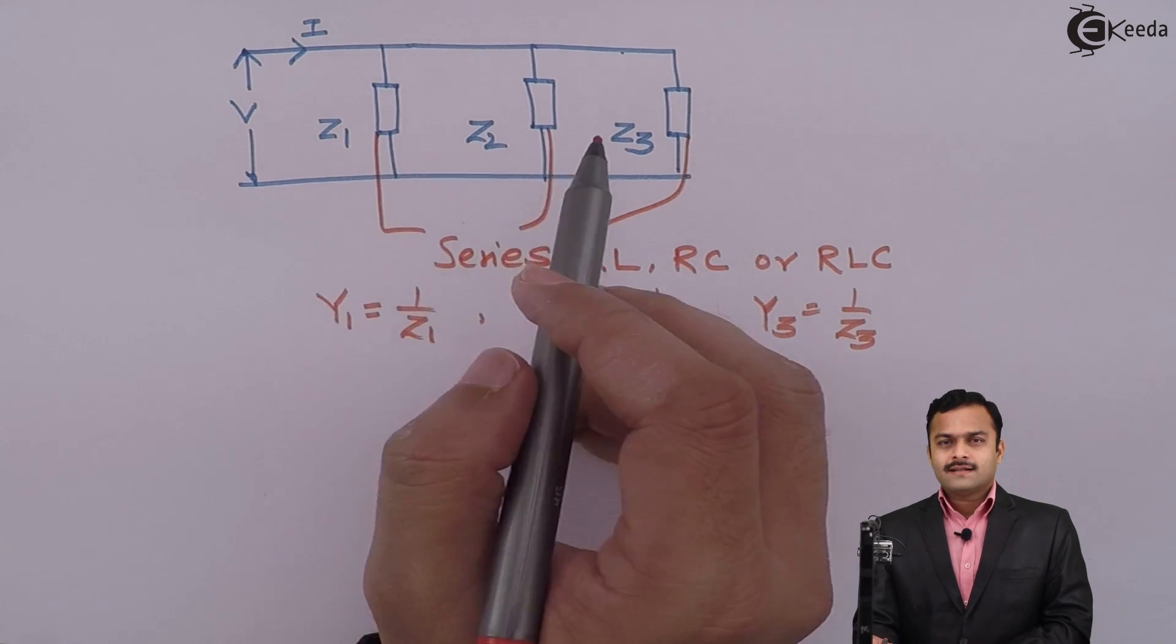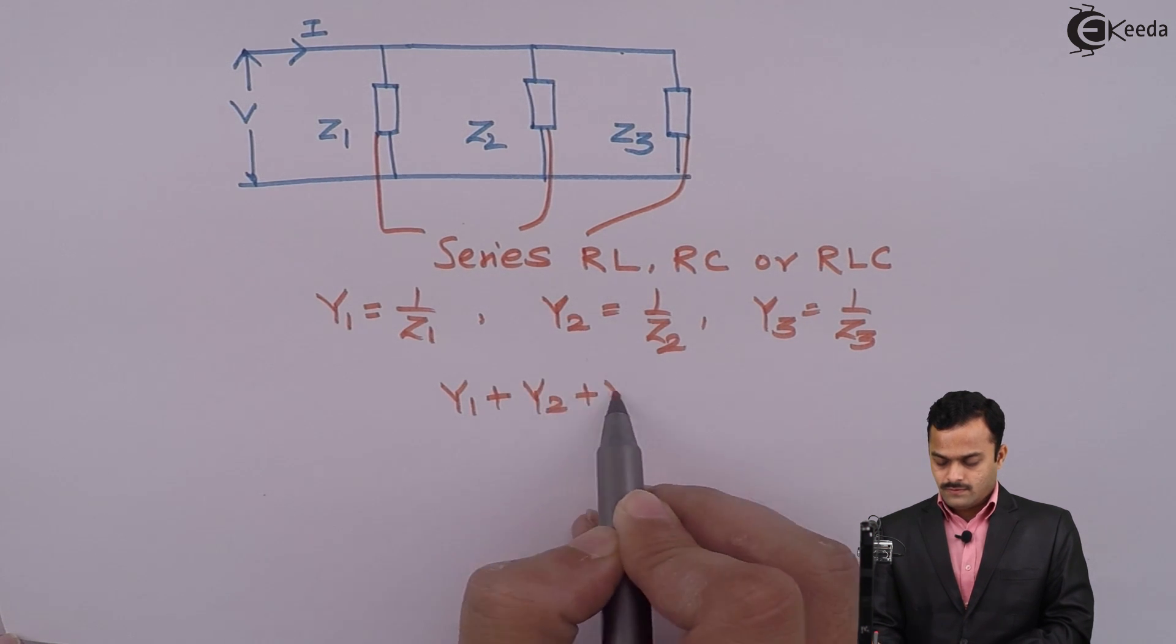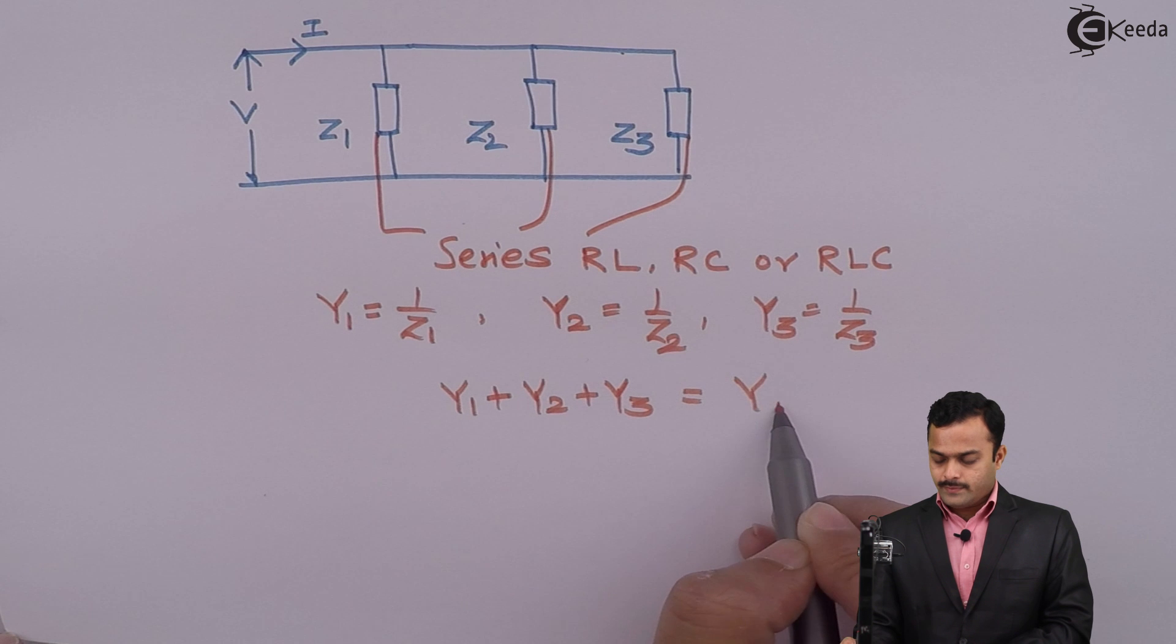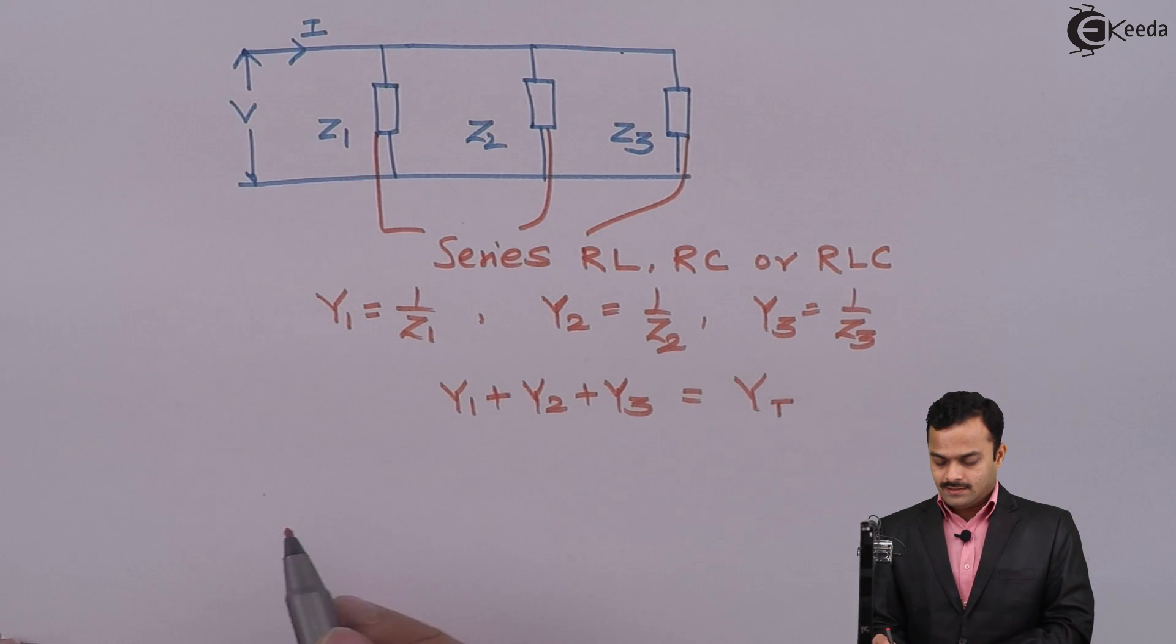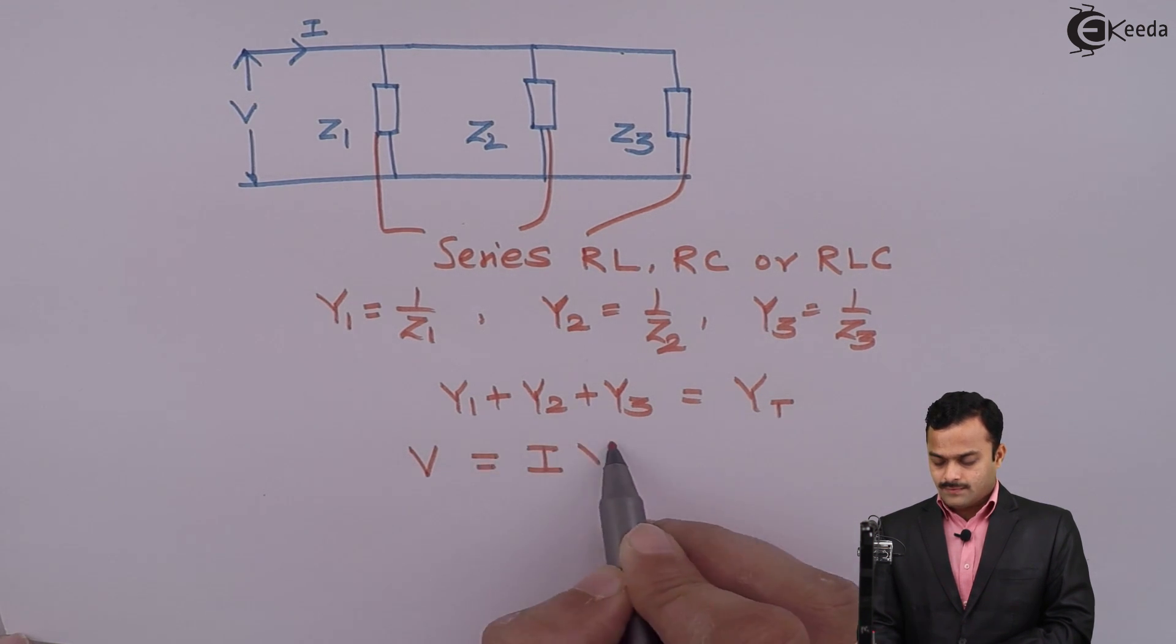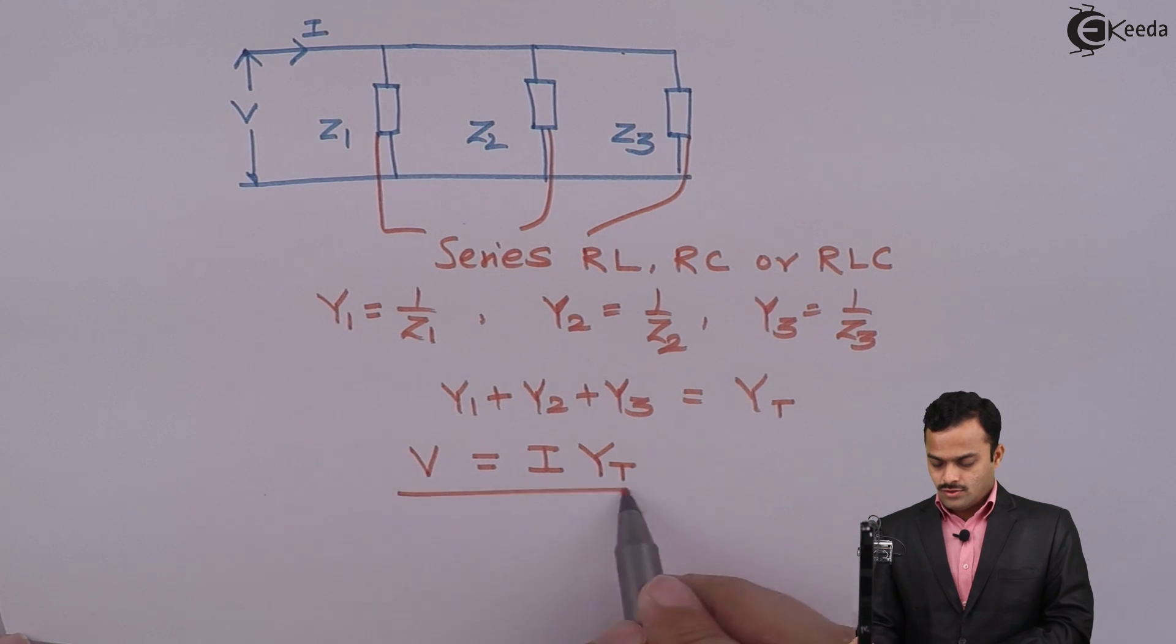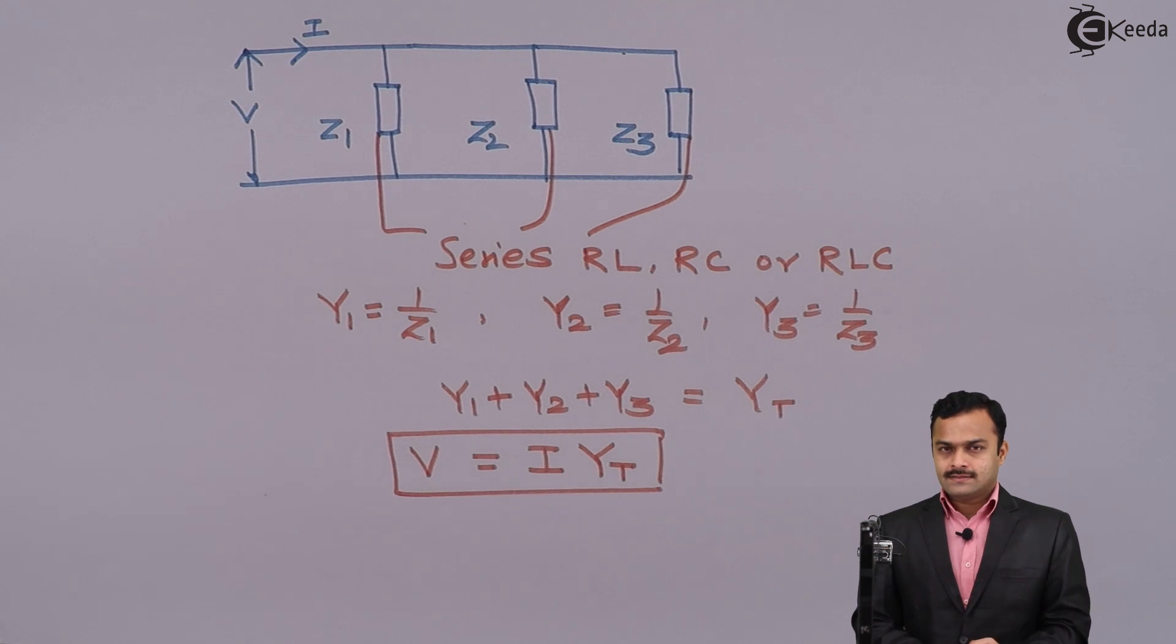Then, in a parallel circuit, addition of all admittances will give you total admittance in the circuit. How is the total admittance related to voltage and current? It's very simple: voltage V will be current multiplied by admittance. Rather than talking in terms of impedances for parallel circuits, it will be better if you consider their admittances. So while solving problems, most of the times we take admittance whenever we deal with parallel circuits. Thank you.